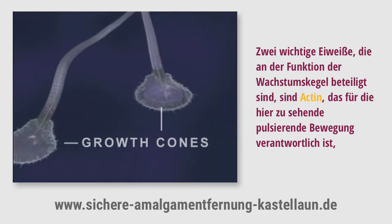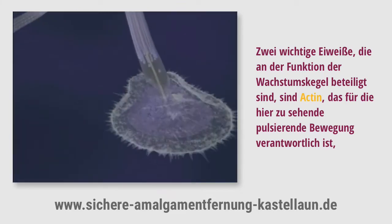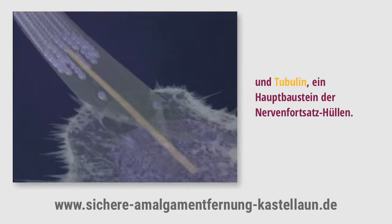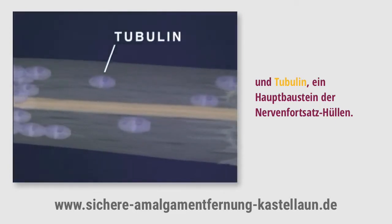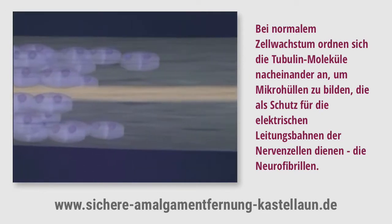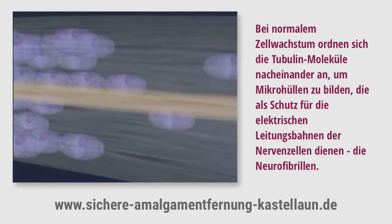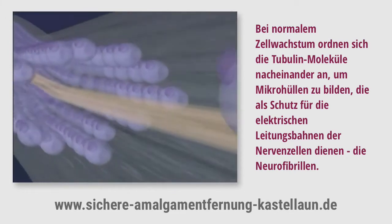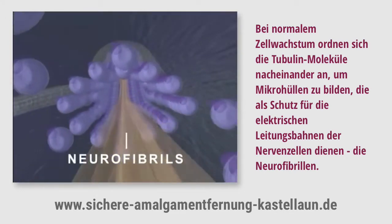Two principal proteins involved in growth cone function are actin, which is responsible for the pulsating motion seen here, and tubulin, a major structural component of the neurite membrane. During normal cell growth, tubulin molecules link together end-to-end to form microtubules, which in turn act as a protective sheath surrounding the cell's electrical conduits, the neurofibrils.